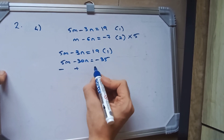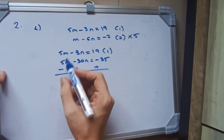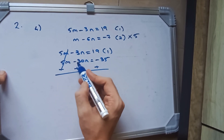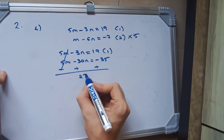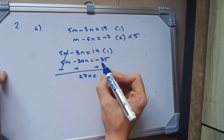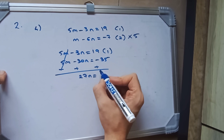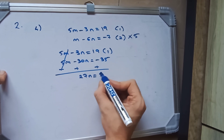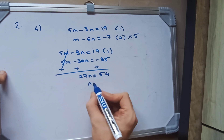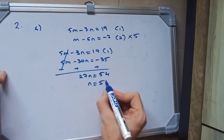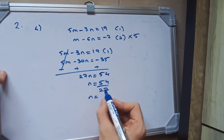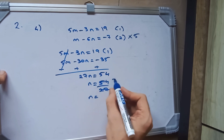And minus 7 into 5 is minus 35. Plus head of minus, minus plus, minus plus. This gets cancelled out. And we have plus 30 minus 3, which is 27n. And we have plus 35 plus 19, which is 54. So n is equal to 54 upon 27, therefore n is equal to 2.